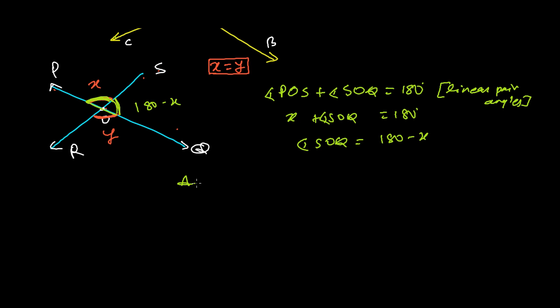Now again, if you see, this is a straight line. Means again, this angle 180 minus X and Y is the linear pair. So the sum of this linear pair angle should be 180 degrees. So again, this is linear pair.